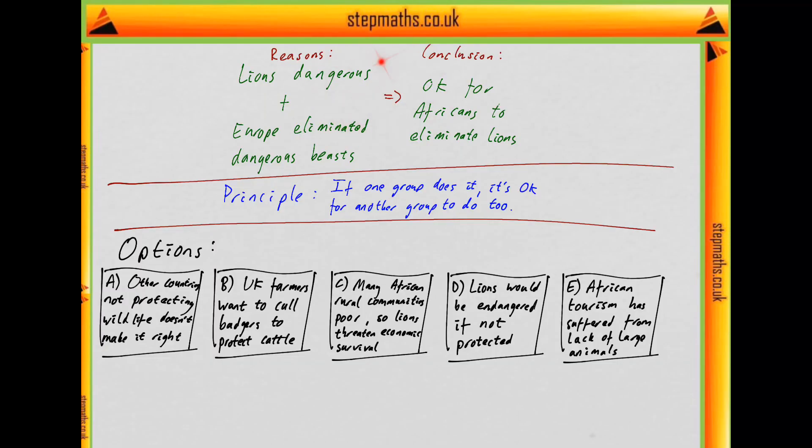Okay, so I've copied in my brief argument structure and the principle that underlies it. And here are my options A to E. And we're looking for something that undermines the argument, which seems to rest on this principle that what one group does is okay for another group to do. And if we look at option A, it says other countries not protecting wildlife doesn't make it right. But that does undermine the principle. It's saying just because other countries do something, it's not okay for further countries to do the same thing. It's not right for Africans also to allow lions to be eliminated. And so actually it looks like this is going to be the right answer because it undermines the principle. Let's just quickly look at the others.